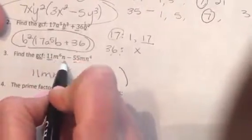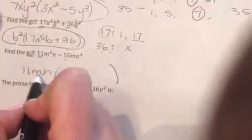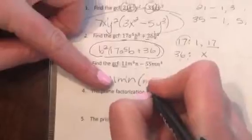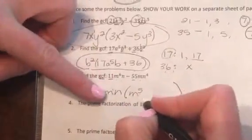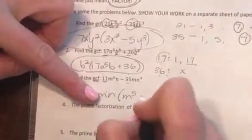11 M to the 6th N divided by 11 M N. Well, the 11's cancel out. The M to the 6th divided by the M to the 1st gives us an M to the 5th. Again, we subtract those exponents, and the N's cancel out.